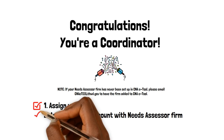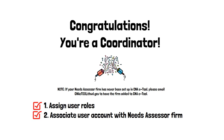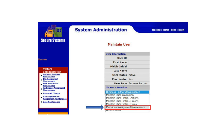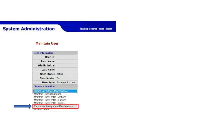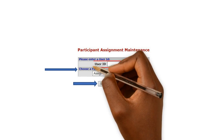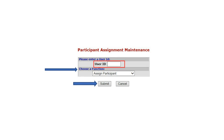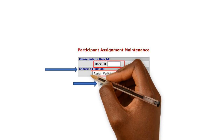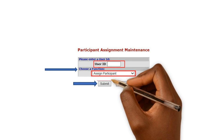The second step is to adjust the user's participant assignment and associate the user's account with your Needs Assessor firm. On the Choose a Function drop-down menu, select Participant Assignment Maintenance and press Submit. On the Assign Maintenance screen, enter the user's MID in the User ID field. Under Choose a Function, select the Assign option and Submit.